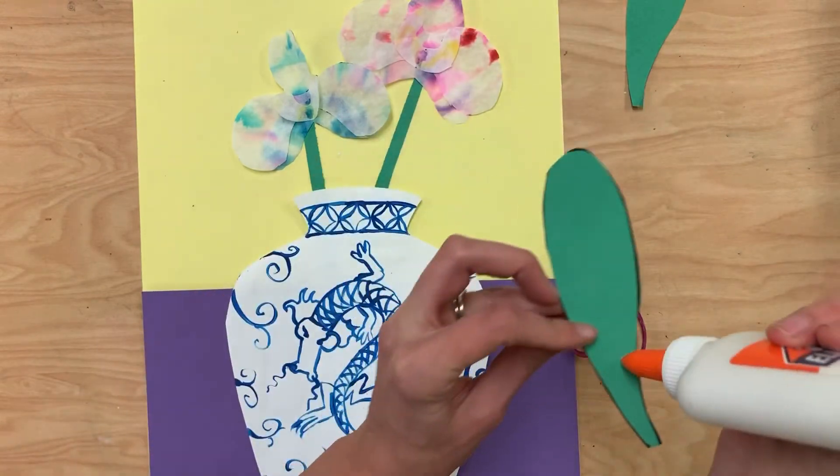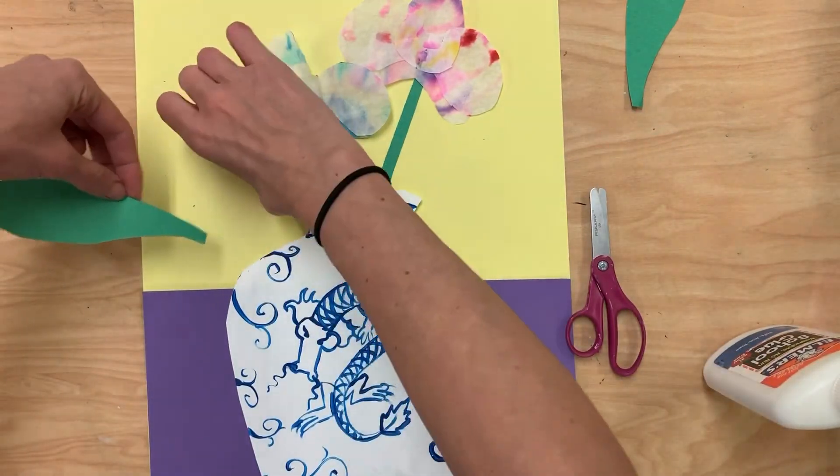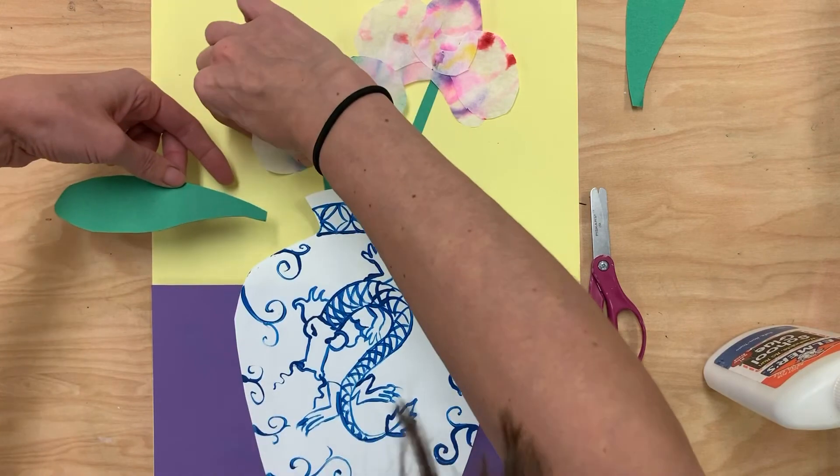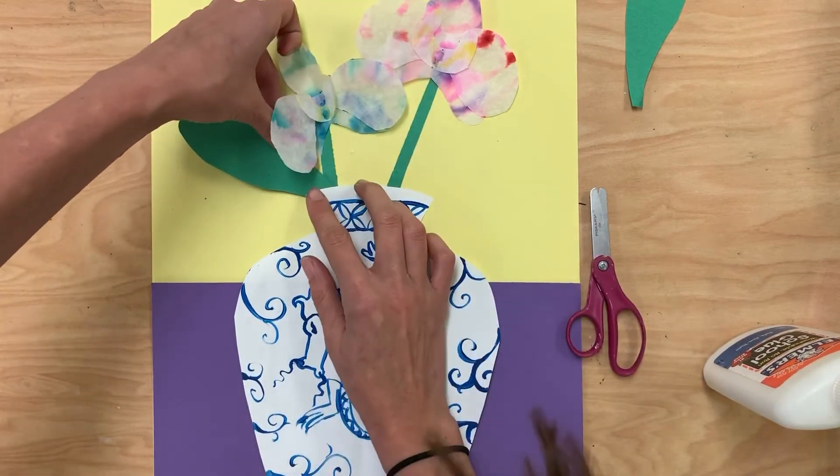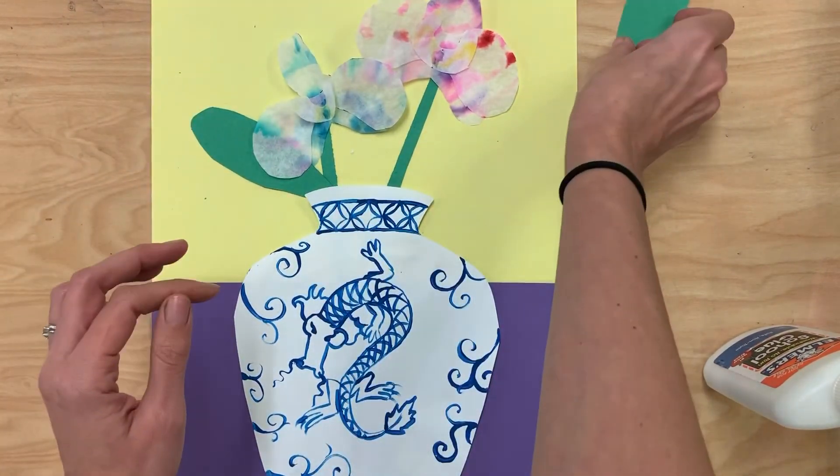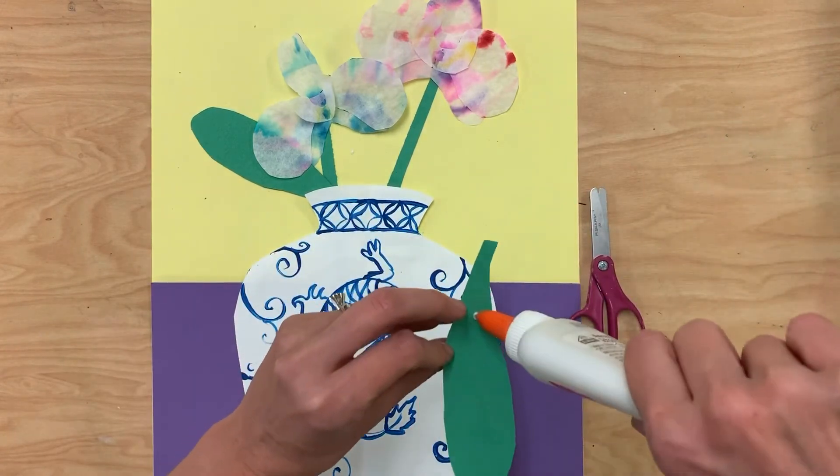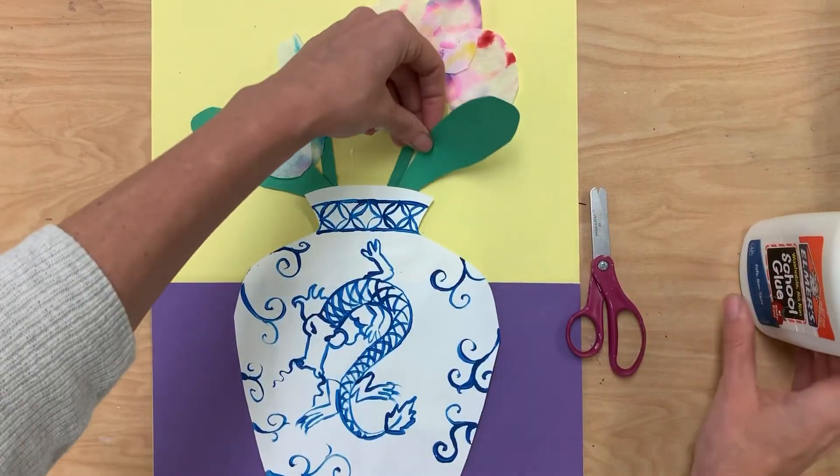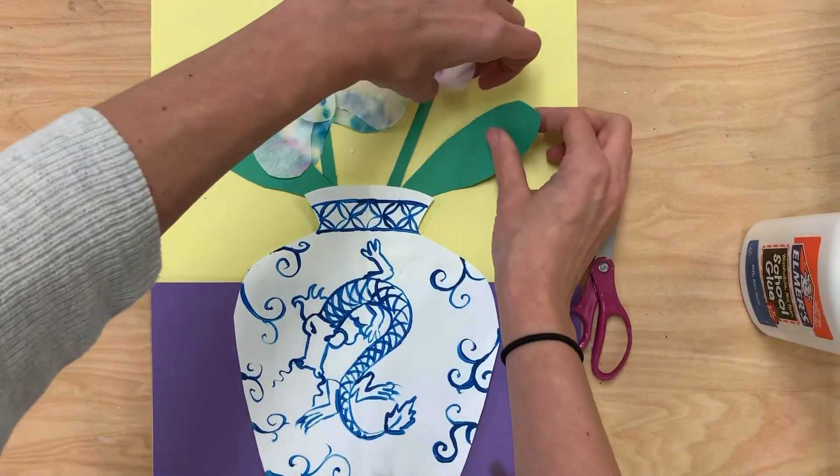And then my leaves, I'm going to stick maybe one on this side. You might want to do it underneath the petals here, coming out from the base. And the other one might be on the other side. Like that.